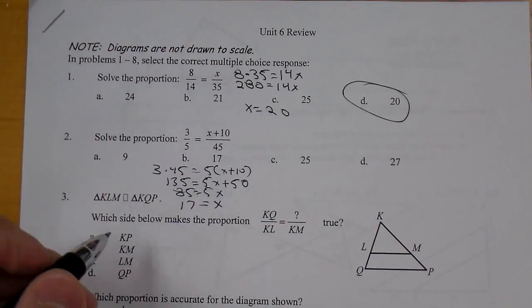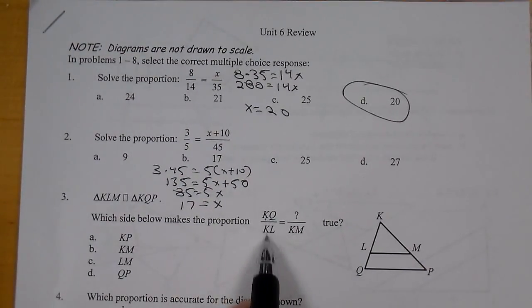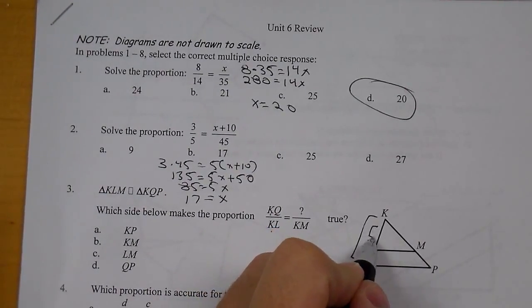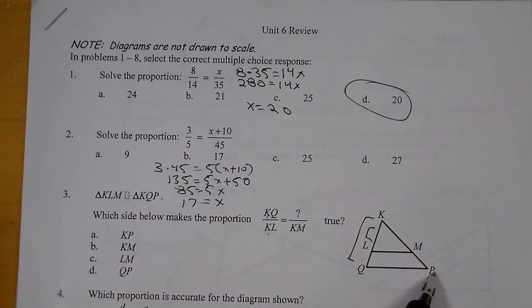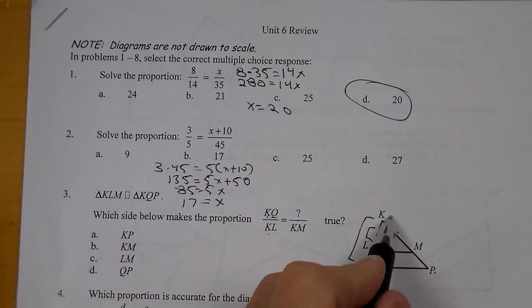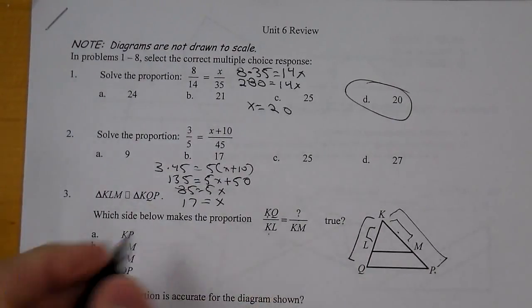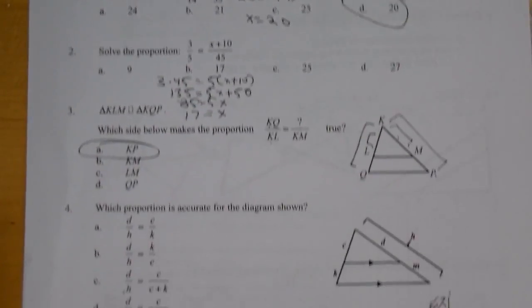Number 3. What makes the proportion true? So we got kq over kl. kq is the whole side, kl is the top piece. So on the other side, we're going to do the whole piece over the top piece. The whole piece is kp over km. So we go with kp as our answer.